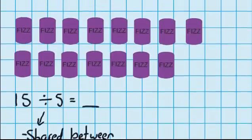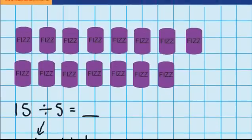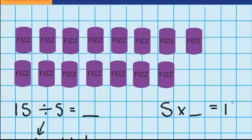So let's go back to our question. I've got these 15 cans, and I need to put them in groups of 5. I might be able to use my multiplication facts. I know that there are 5 in each group, so I'm thinking: 5 times what would use up all the 15 cans? Well, I know that 5 times 3 equals 15, so that means there should be 3 groups.